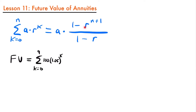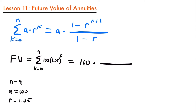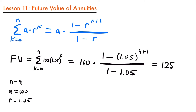Now we're ready to use the geometric series formula to find the sum, or the future value of our annuity. Our n equals nine, our constant a equals 100, and our ratio r equals 1.05. So the future value equals 100 times (1 minus 1.05 to the power of 9 plus 1) divided by (1 minus 1.05). Plugging this into our calculator, we find the future value equals $1,257.79.